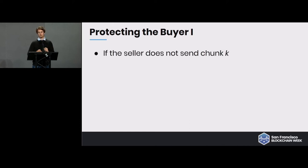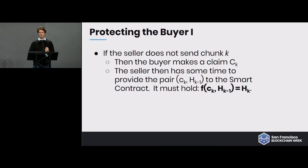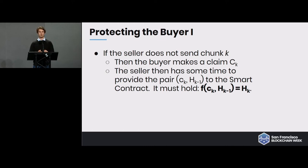If the seller does not send chunk k, the buyer must make an on-chain claim that he didn't receive it. The seller then has some time to provide the pair to the smart contract, and the smart contract verifies that F(ck, h(k-1)) equals h(k). The smart contract enforces the rules of the protocol in the case of a dispute — of course if there's no dispute, there's no need for this mechanism.